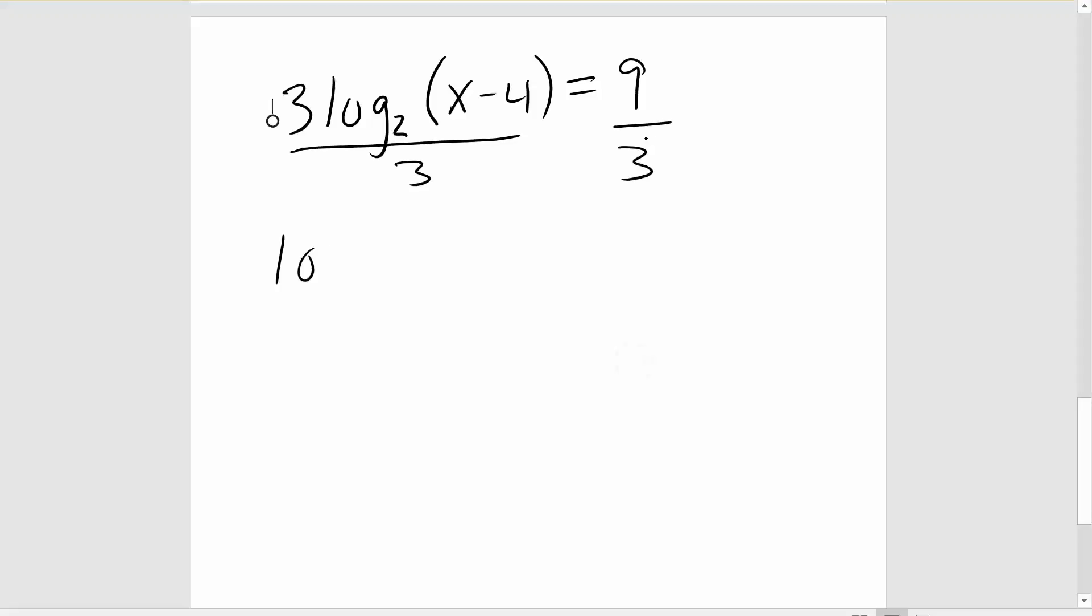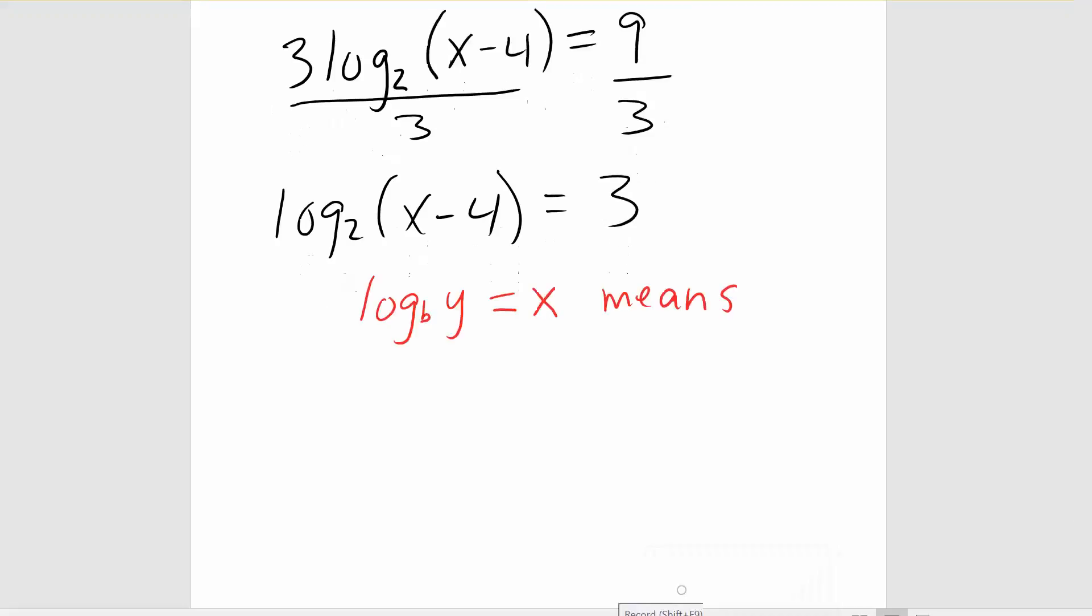It's going to leave us with log base 2 of x minus 4 on the left and 3 on the right. At this point, we are going to use the property of logarithms that says log base b of y equals x means that b to the power of x equals y.